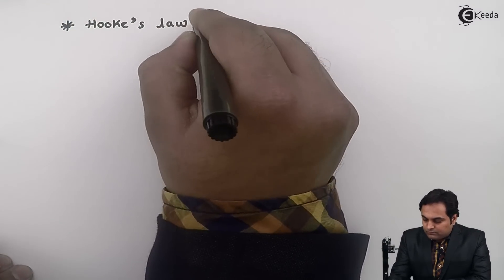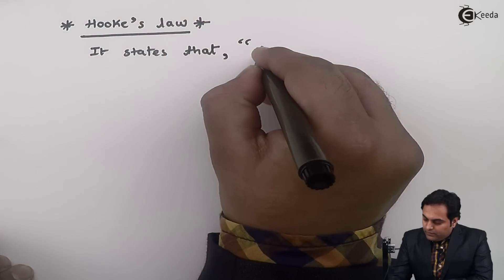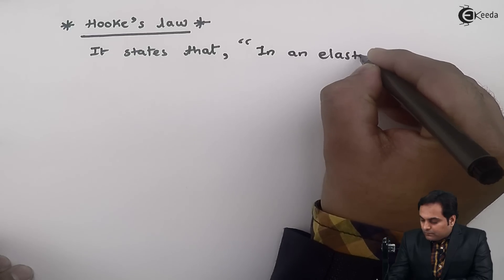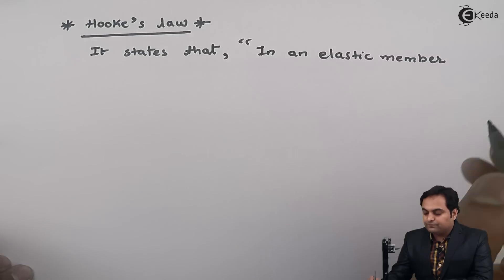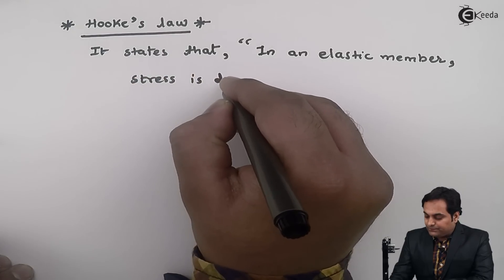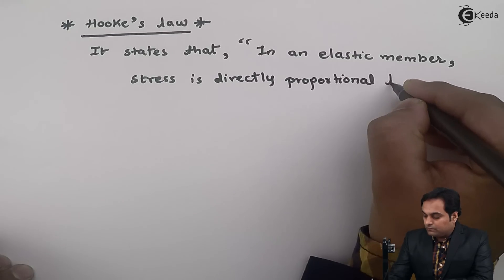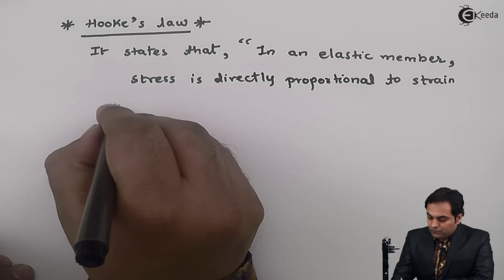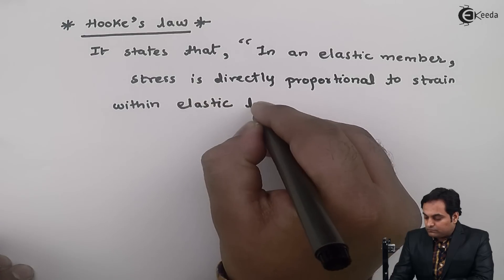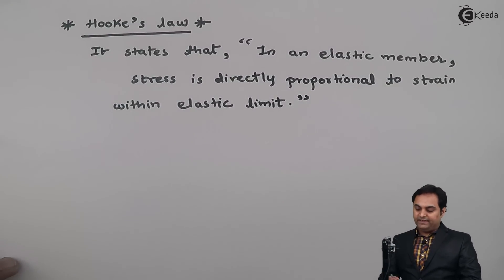Hello friends, in this video we are going to see what is meant by Hooke's Law. Hooke's Law states that in an elastic member, stress is directly proportional to strain within the elastic limit. Here is Hooke's Law, and I can explain it with the help of a diagram.